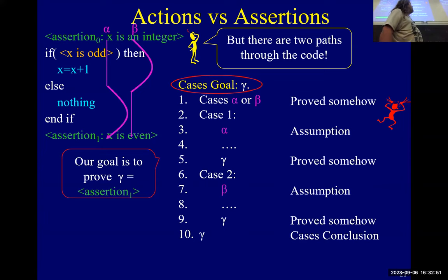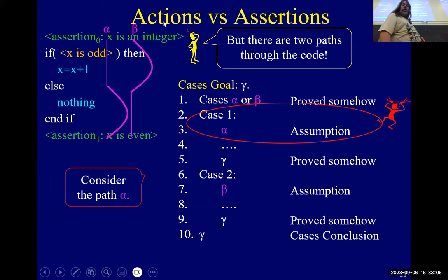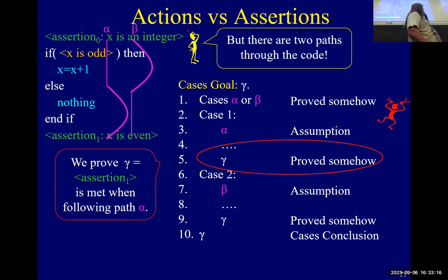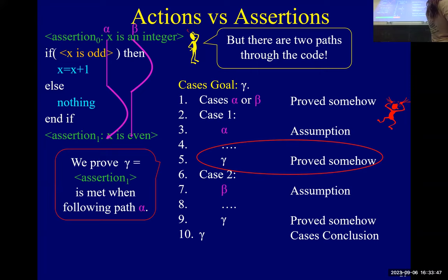Our goal is to prove assertion one is true. We look at the code and see there are two paths. In the first path, the if condition is true, which says x is odd — so then you add one to it, which makes it even, and we arrive at the assertion. In the other case, the if condition is not true, so x is even because we knew x is an integer — then you don't add anything, and it's still even.